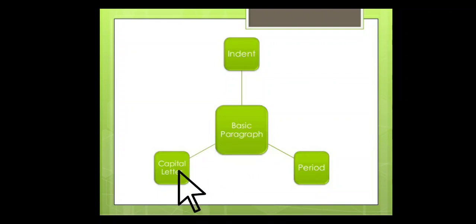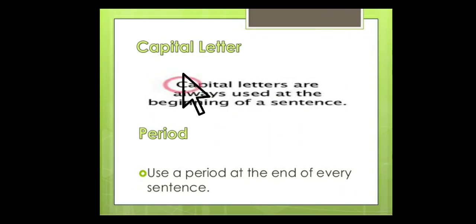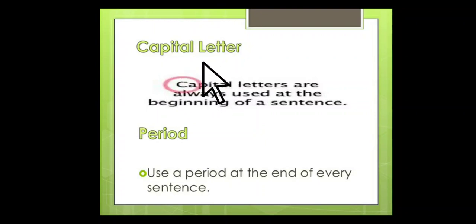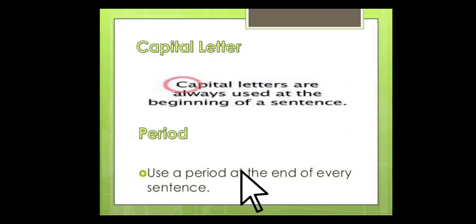While writing a paragraph, we have to use a capital letter. Capital letters are always used at the beginning of a sentence. Whenever we are starting a new sentence, we have to start it with a capital letter. Then, use a period at the end of every sentence.